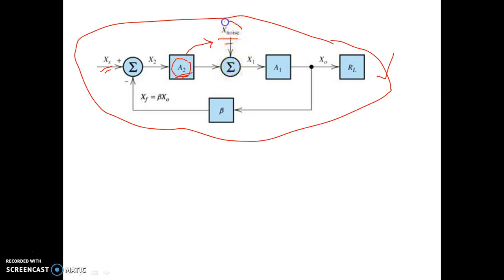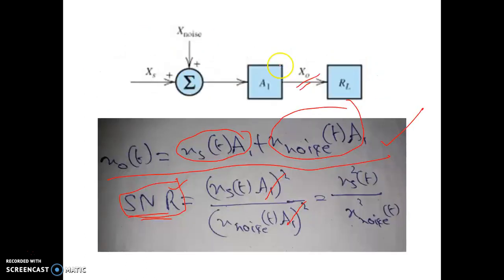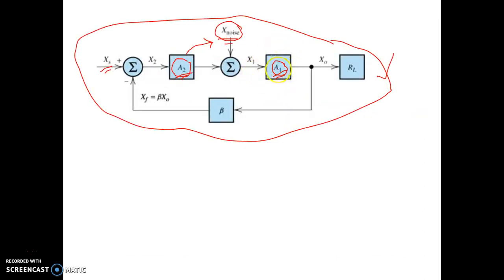X2 is passed through the preamplifier block with gain A2, then it is added to X_noise, giving X1 at the output of the summation block: X1 equals X_noise plus A2·X2. X1 is then passed through the amplifier block A1, and we take the output across the load resistor RL. The feedback has gain beta, so the feedback signal XF equals beta·X_output. Output voltage is the input of the feedback block.